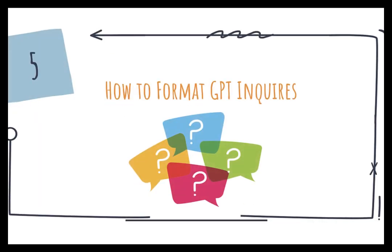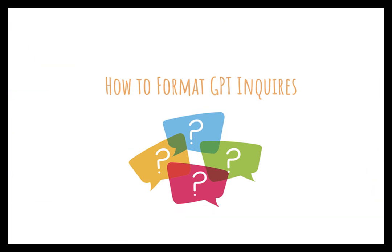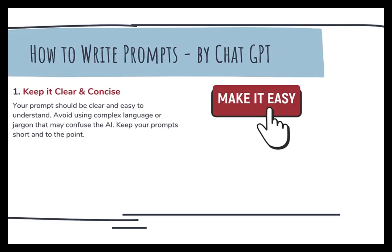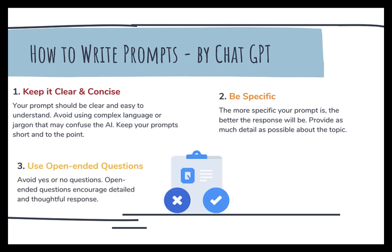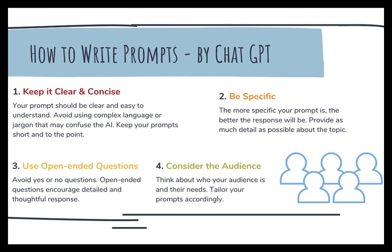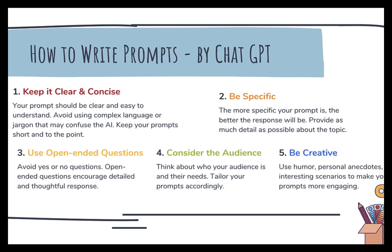Let's talk about how to format your ChatGPT inquiries. When writing prompts for AI models, you want to make it easy — clear and concise, avoiding complex language or jargon. Be specific and provide as much detail as possible about the topic. Use open-ended questions to encourage detailed and thoughtful responses. Consider the audience and tailor your prompts accordingly. And be creative — use humor and personal anecdotes to make your prompts more engaging.